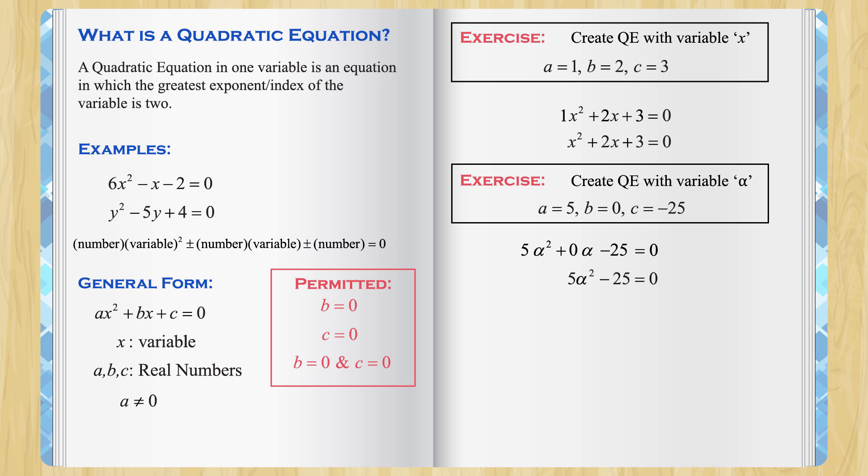We can simplify it further by dividing it by 5. So, we have alpha squared minus 5 equal to 0.